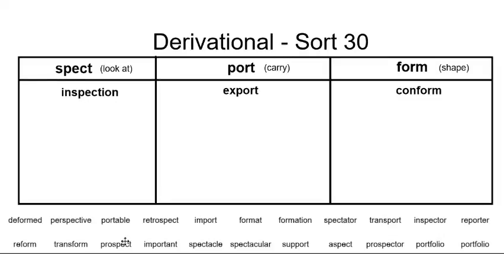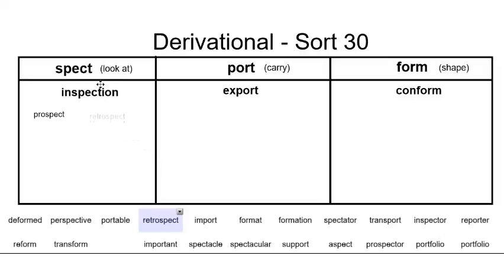Let's go ahead and look at a couple other words with the 'spect' root word. The word 'prospect' has the prefix 'pro,' which means before, so prospect means to look before. In contrast, the word 'retrospect' actually means to look in the past, since 'retro' means in the past.